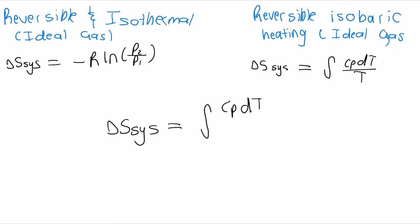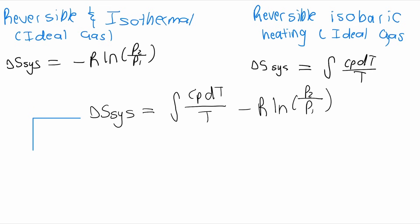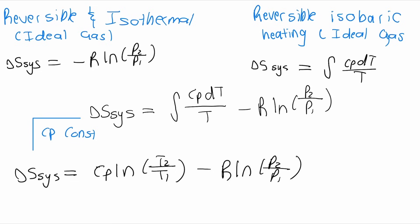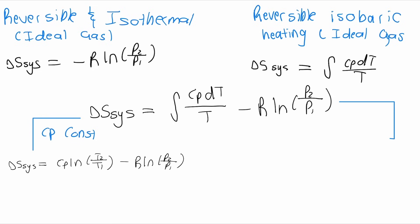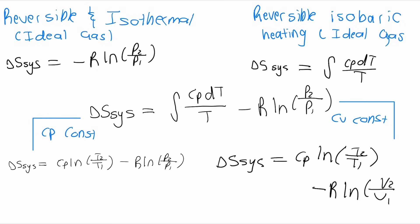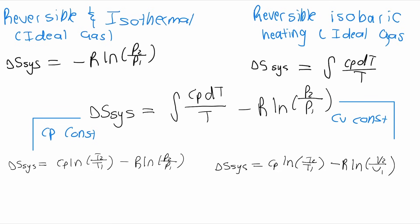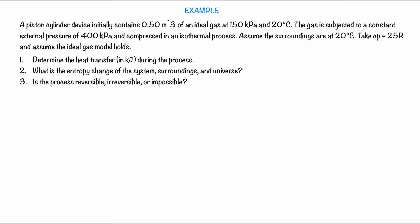From these two formulas, we get a general formula that we can use. We can simplify this equation based on conditions: if Cp is constant, we use this equation, and if Cv is constant, we can use this equation. Remember that in these formulas, the s is lowercase, indicating that entropy is per mole.